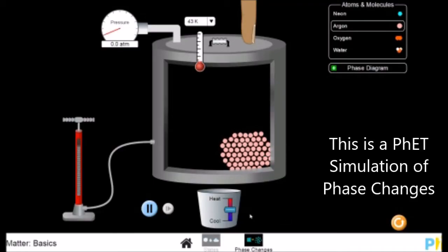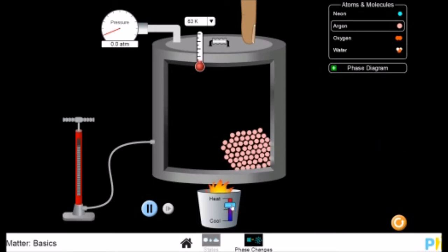This is a PhET simulation of phase changes. The pink circles in the middle will represent molecules, generic molecules. And you can see their motion is affected by the temperature, which I have control over. So at this point, fairly low level of motion.